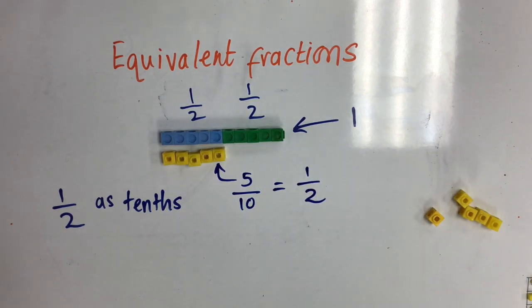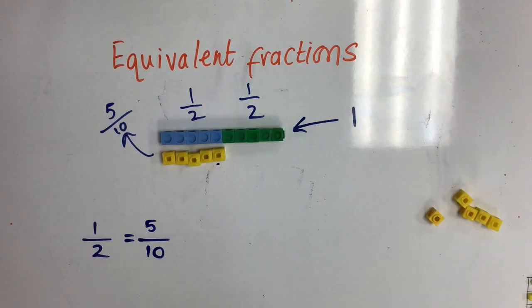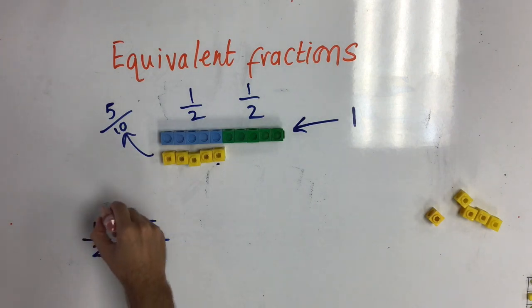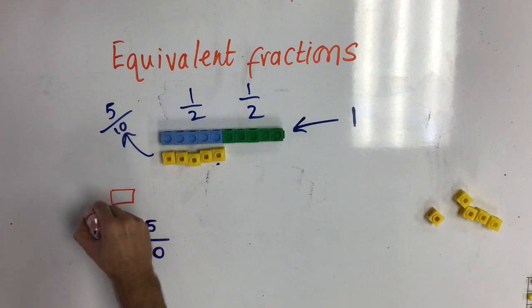But how can we think about this in an abstract way? We've just said, using the blocks, that one half and five tenths are the same. But if we're going to think about this in an abstract way, we can use times tables to help us. Using times tables, can you think of a link between the numbers in our fractions?